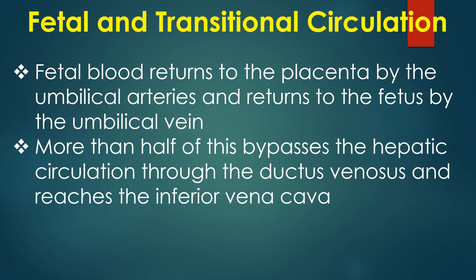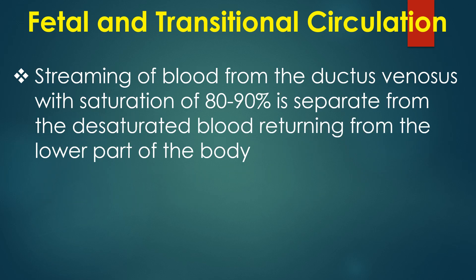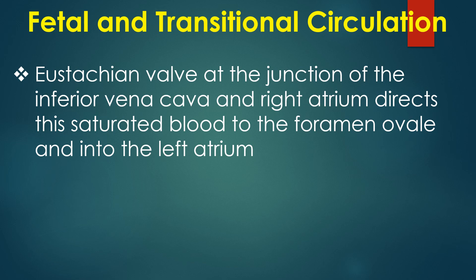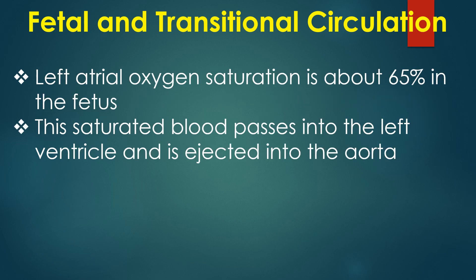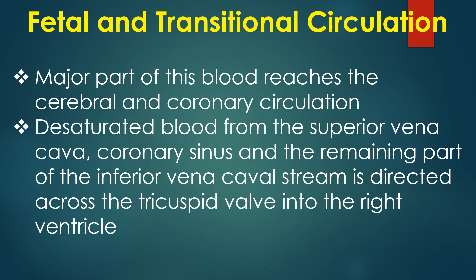Fetal blood returns to the placenta by the umbilical arteries and returns to the fetus by the umbilical vein. More than half of this bypasses hepatic circulation through the ductus venosus and reaches the inferior vena cava. Streaming of blood from the ductus venosus — with saturation of 80–90% — is separate from the desaturated blood returning from the lower body. The Eustachian valve at the junction of the inferior vena cava and right atrium directs this saturated blood to the foramen ovale and into the left atrium. Left atrial oxygen saturation is about 65% in the fetus.